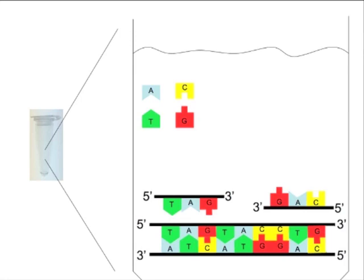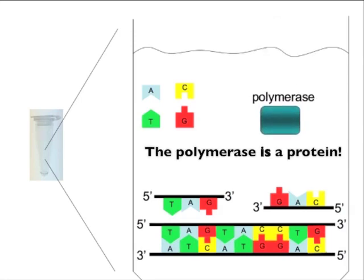The last thing to add into our reaction is called the polymerase. The polymerase is like the copier itself. It is the machine that will actually use the DNA bases, the template DNA, and the primers to make copies of the DNA strand.